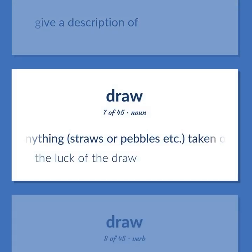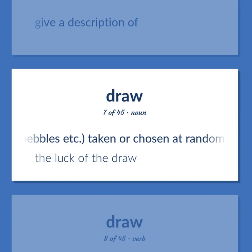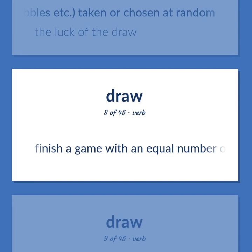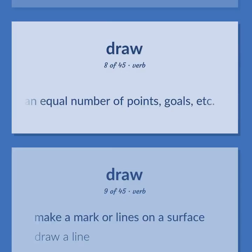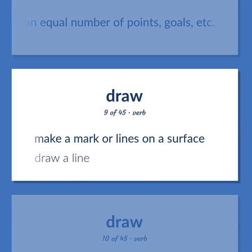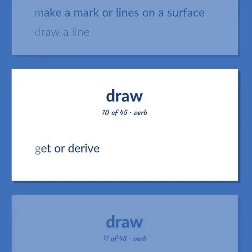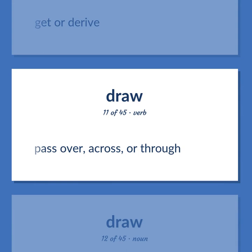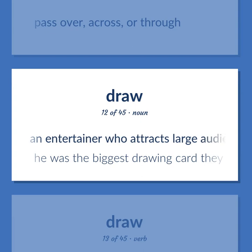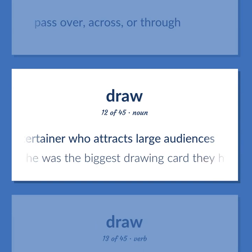Anything — straws or pebbles etc. — taken or chosen at random. The luck of the draw. Finish a game with an equal number of points, goals, etc. Make a mark or lines on a surface. Draw a line. Get or derive. Pass over, across, or through. An entertainer who attracts large audiences. He was the biggest drawing card they had. Direct toward itself or oneself by means of some psychological power or physical attributes.